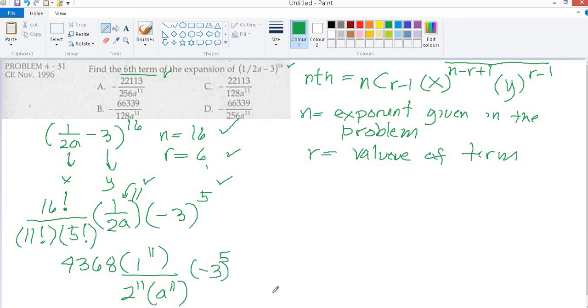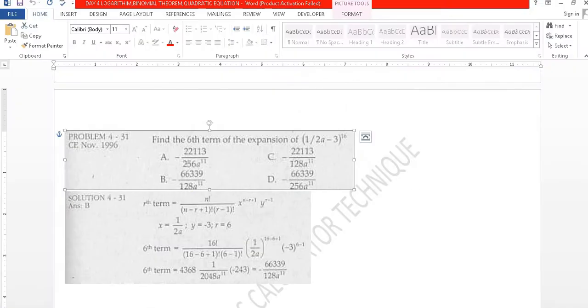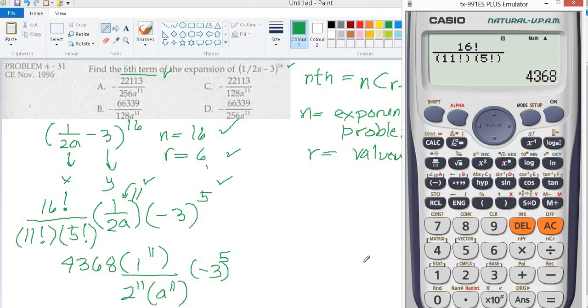So we will compute for the numerical coefficient first. So 4368 over 2 raised to 11. 1 raised to 11 is 1, times negative 3 raised to 5.